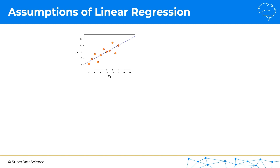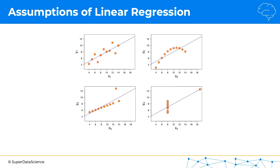Here we've got a dataset with a linear regression applied, and this linear regression seems to be serving its purpose really well. However, if we look at the following three datasets, we can see that a linear regression is applied each time — in fact, it's exactly the same linear regression as in the first case. However, those linear regressions are not serving their purpose; they are misleading. So we shouldn't be using linear regression in those situations.